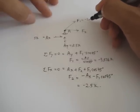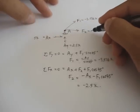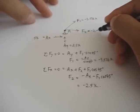Again, F1 is minus 3.536 kips. F2 is minus 2.5 kips.